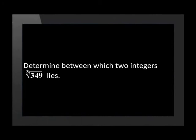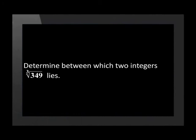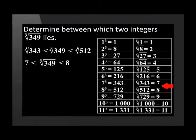We are able to find between which two cubes an integer lies in a similar way. Determine between which two integers the cube root of 349 lies. If we look at the table of cubed numbers, we see that the cube root of 349 lies between the cube root of 343 and the cube root of 512. This means that the cube root of 349 lies between 7 and 8.